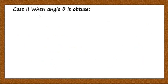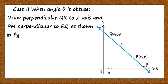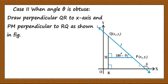Similarly, let us take the second case, when angle theta is obtuse. Let us take a line L such that the angle made by the line is theta, where theta is obtuse. Draw perpendicular QR to the x-axis and PM perpendicular to QR. Suppose this angle is theta; you can observe that this angle is 180 minus theta. And since PM and the x-axis are parallel, this angle is also 180 minus theta.